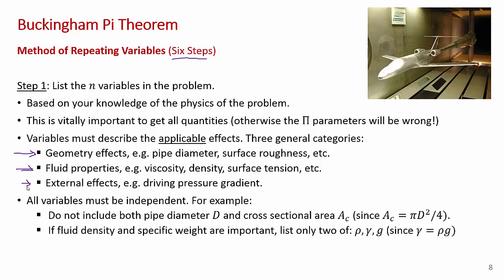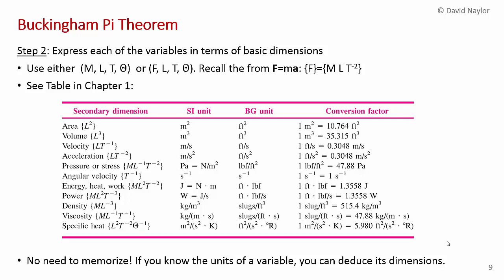It's really important that all the variables you pick be independent. For example, if you were considering a pipe problem, you don't want to include both the diameter and the cross-sectional area as variables because they're not independent — given the diameter you can calculate the area. You'd include either the cross-sectional area or the diameter, but not both. Similarly, if your problem involves fluid density and specific weight, you'd list only two of rho, gamma, and g, because gamma equals rho times g, so given any two you can deduce the third.